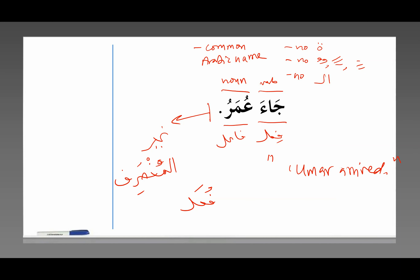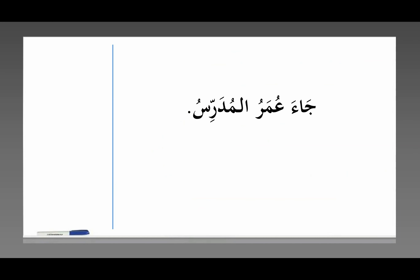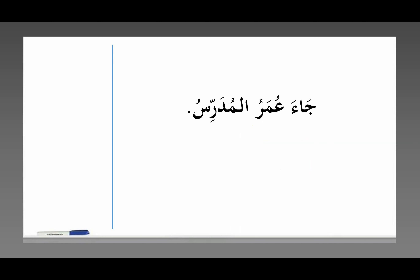So, very simple sentence: Umar arrived. What about this: جاء عمر المدرس? Same structure — this is the fi'l, the verb; this is the fa'il, the doer of the action. But now we have an additional word: المدرس. What is the grammatical function of this word in the sentence? This is a new structure we're going to learn about in this lesson. جاء عمر means Umar arrived. المدرس means the teacher.